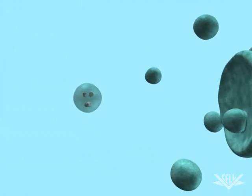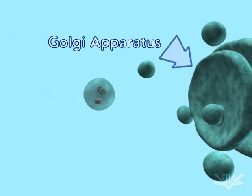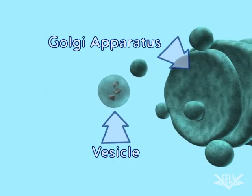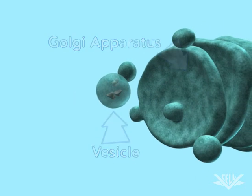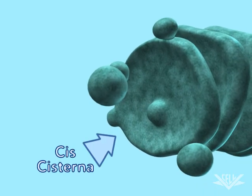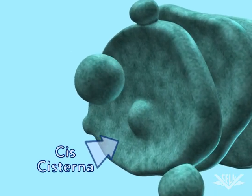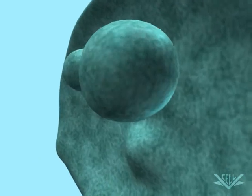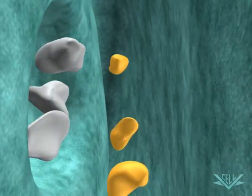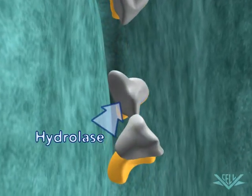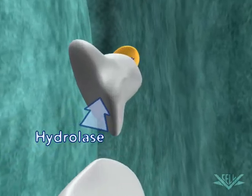First, the hydrolase is delivered from the ER to the Golgi apparatus via a vesicle. While it is being transferred through the ER and cis cisterna of the Golgi apparatus, the modification of the sugar core oligosaccharide begins. The term for this process is glycosylation.